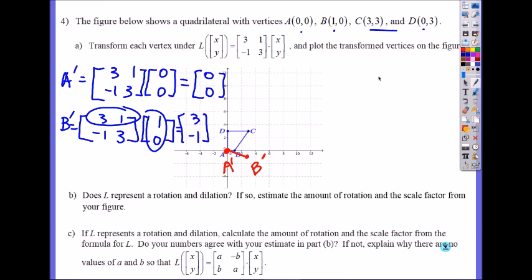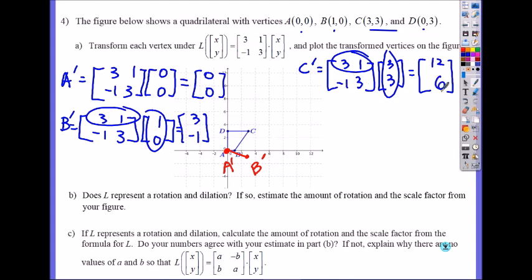What about C? I'll write it here. C prime is now 3, negative 1, 1, 3 times what? 3, 3. So when you multiply these two, sandwich it, so you get 9 plus 3, 12. Here you get 3 times negative 1, negative 3, plus 3 times 3 is 6. Negative 3 plus 9 is 6. So your C prime is at 12, 6.